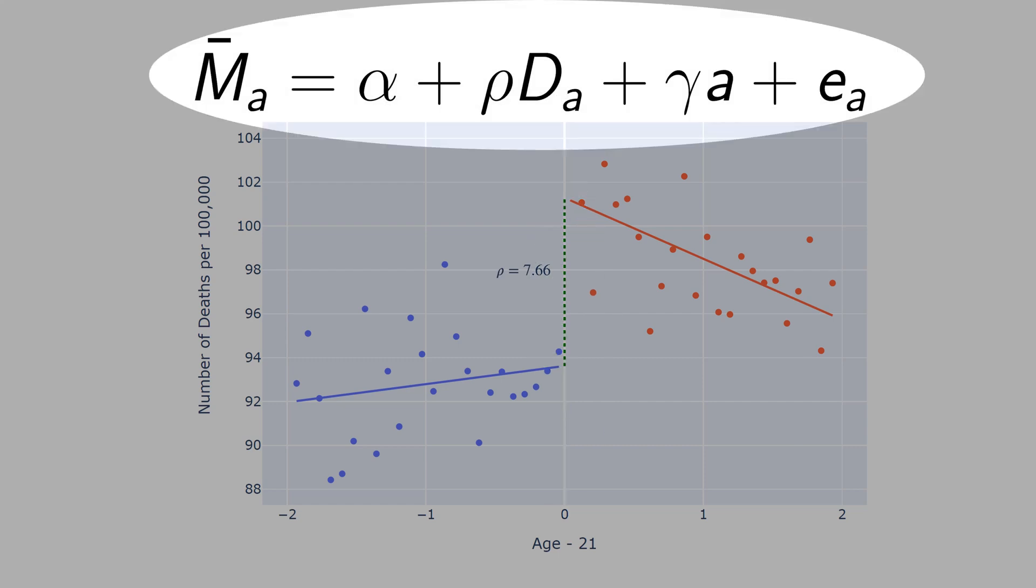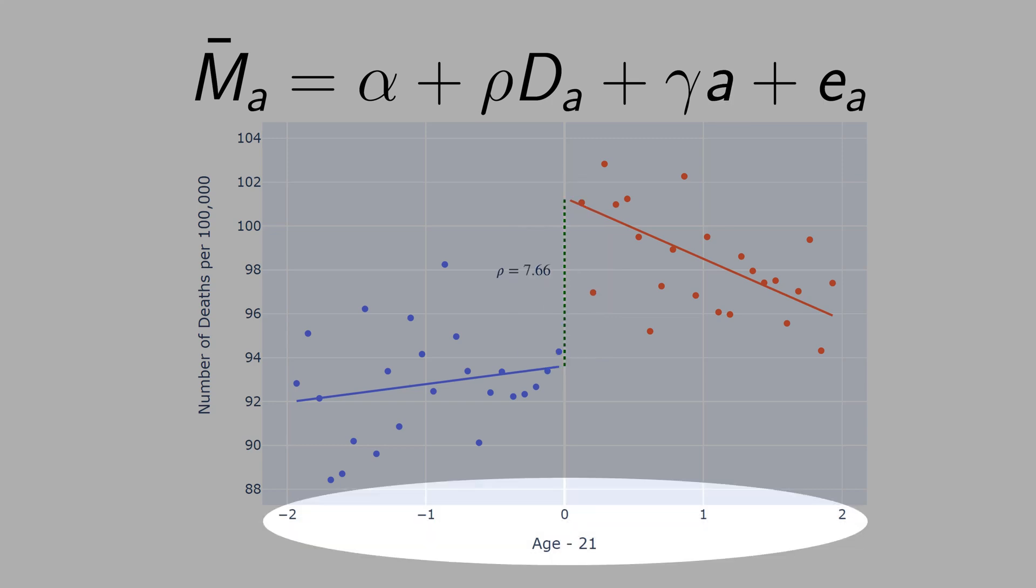Does this equation suffer from omitted variable bias? D was not randomized. How do I know that D is uncorrelated with the error term? I know that D is uncorrelated with the error term because D is determined by age. And you have age here in the equation. Regression discontinuity is so powerful because we don't need to control for any other factor if you control for age. Age is known as well as a running variable or score variable because it determines control and the treatment group.